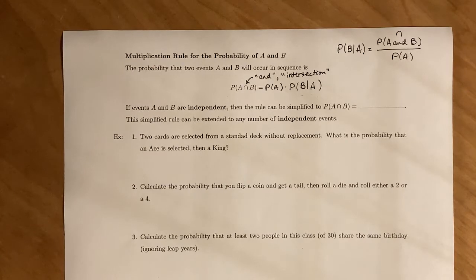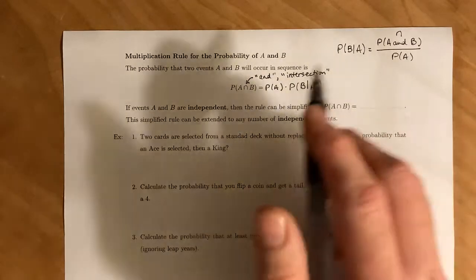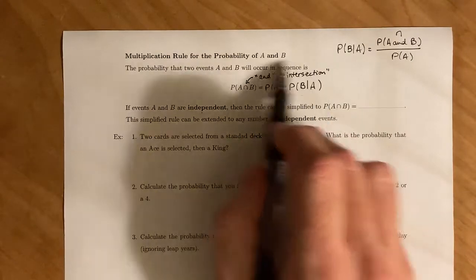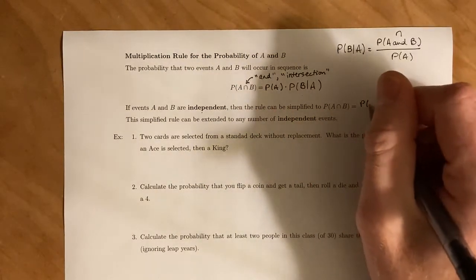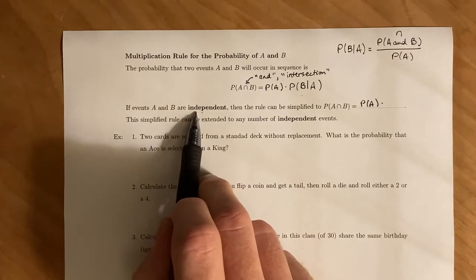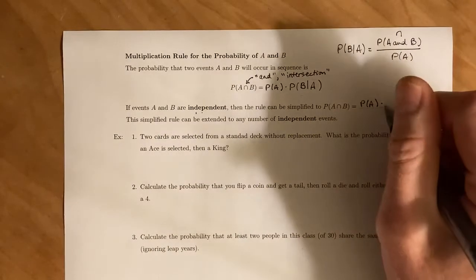Now if two events are independent, that simplifies our calculation a little bit. So the probability of A and B, since they're independent, using this multiplication rule, we get that's the probability of A times, here's where the independent comes from. Since they're independent, the probability of B given A is just the probability of B.